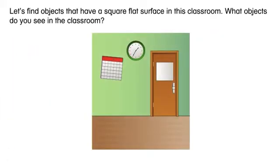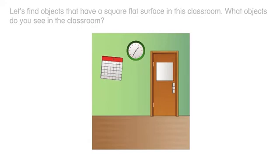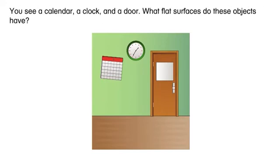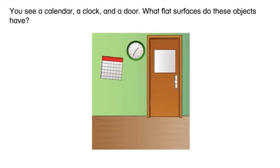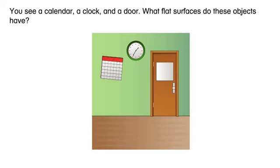Let's find objects that have a square flat surface in this classroom. What objects do you see in the classroom? You see a calendar, a clock, and a door. What flat surfaces do these objects have?